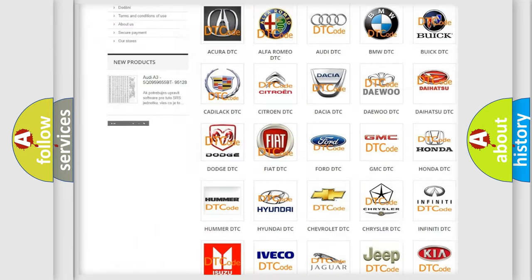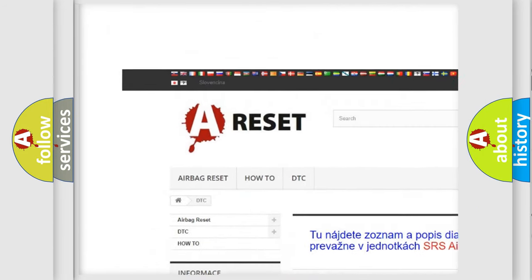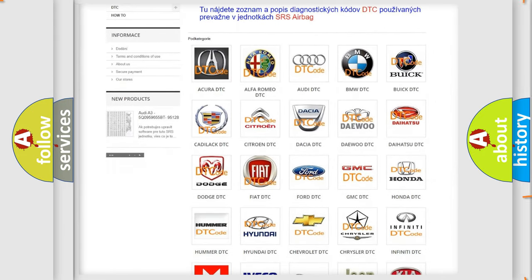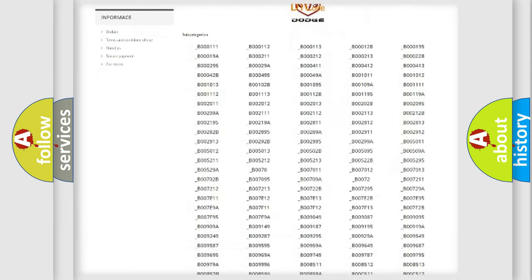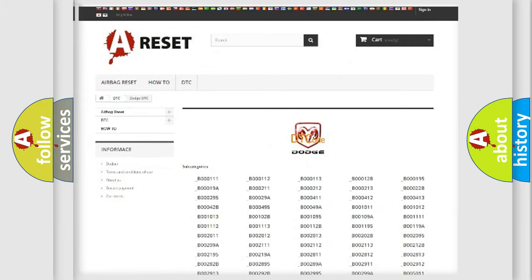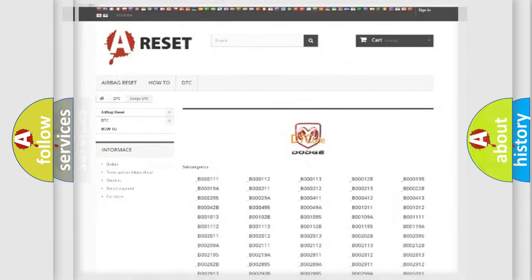Our website airbagreset.sk produces useful videos for you. You do not have to go through the OBD2 protocol anymore to know how to troubleshoot any car breakdown. You will find all the diagnostic codes that can be diagnosed in Dodge vehicles, and also many other useful things.